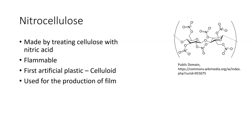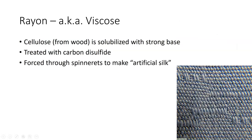Nitrocellulose was the first form of material used to make plastics, done by treating cellulose with nitric acid. We have what we call rayon — some people call it viscose. They take cellulose from wood, it's solubilized with a strong base, treated with carbon disulfide, then forced through spinnerets to make an artificial silk.